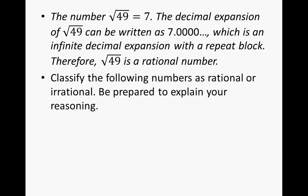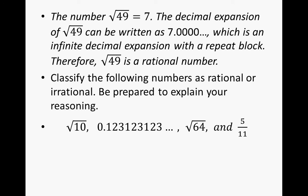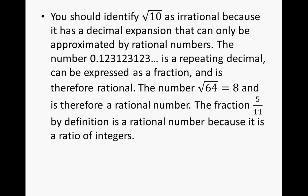Classify the following numbers as rational or irrational and be prepared to explain your reasoning. Square root of 10 is irrational, because it has a decimal expansion that can only be approximated by rational numbers. The number 0.123123123... is a repeating decimal that can be expressed as a fraction and is therefore rational. Square root of 64 equals 8 and is therefore rational. The fraction 5/11 is by definition a rational number because it is a ratio of integers.